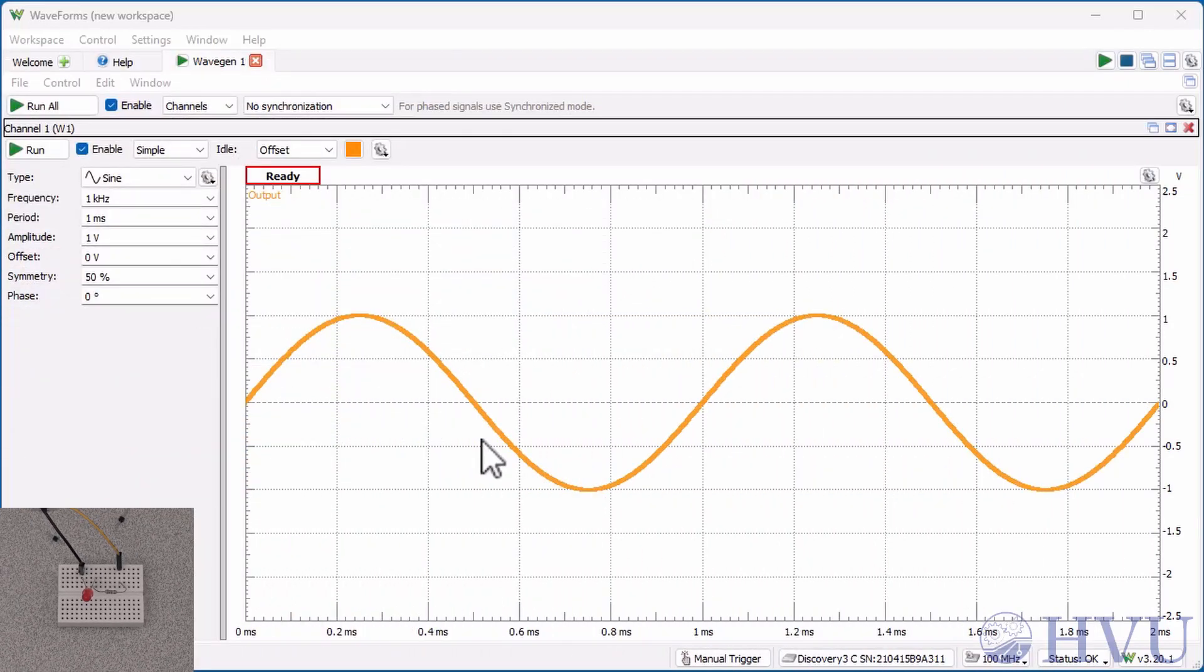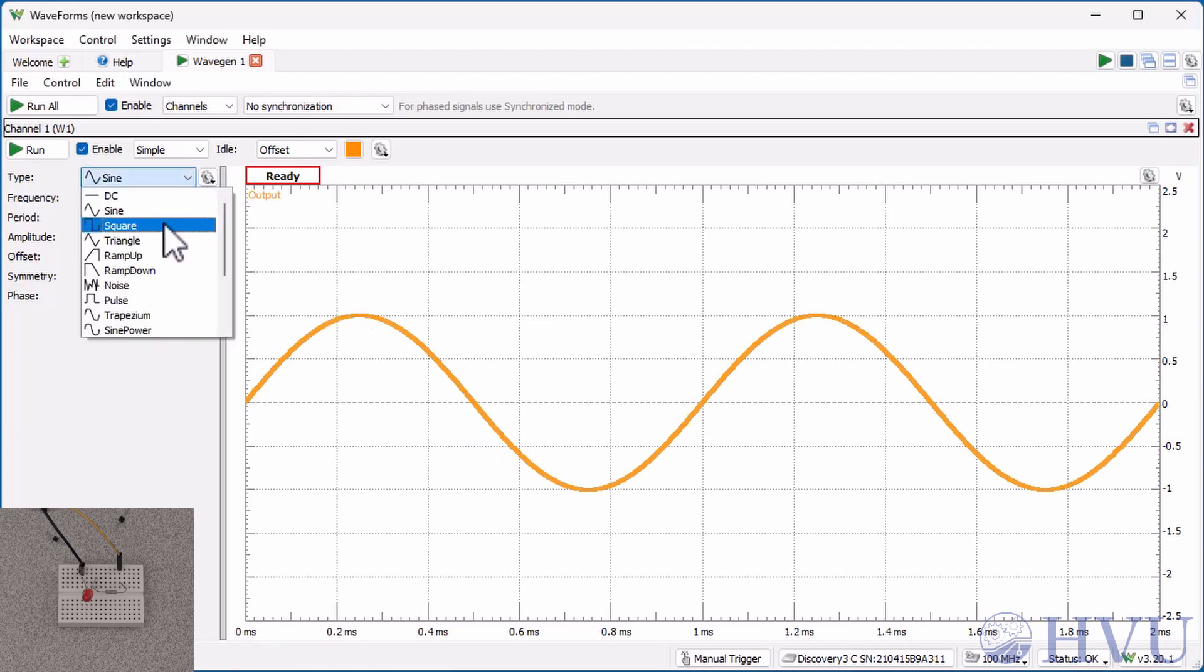Now we'll use the waveform generator to make the LED in our circuit flicker. To do this, I'll apply a square wave with a frequency of 1 Hertz and an amplitude that goes from negative 4 volts to positive 4 volts to the LED. To create our signal, click on the signal type and select square.